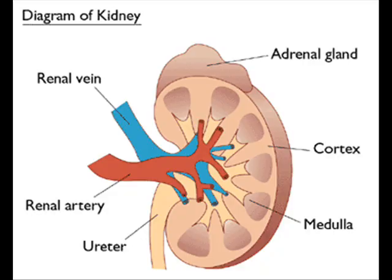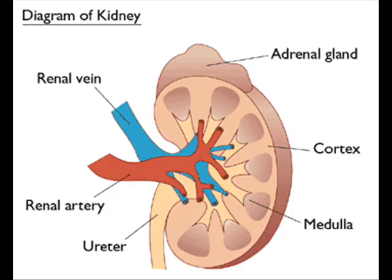The kidney consists of a capsule which surrounds it. It also consists of regions called the cortex and the medulla. It is connected to the ureter which removes all the waste products of the kidney. The blood enters the kidney through the renal artery and blood leaves the kidney through the renal vein.